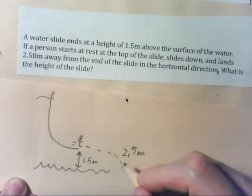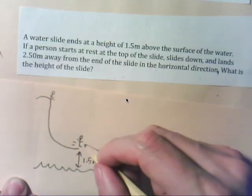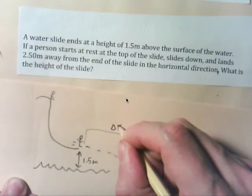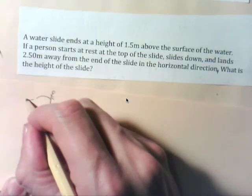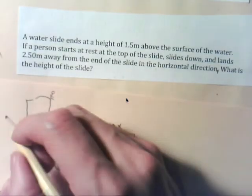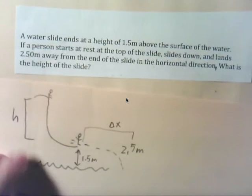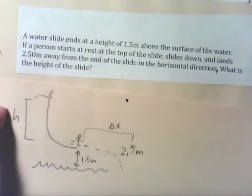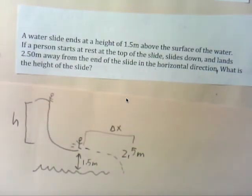This distance here is 2.5 meters, and call that delta x. We also know that we're looking for just the height of the slide, not the height of the man from the water, but the height of the slide itself.